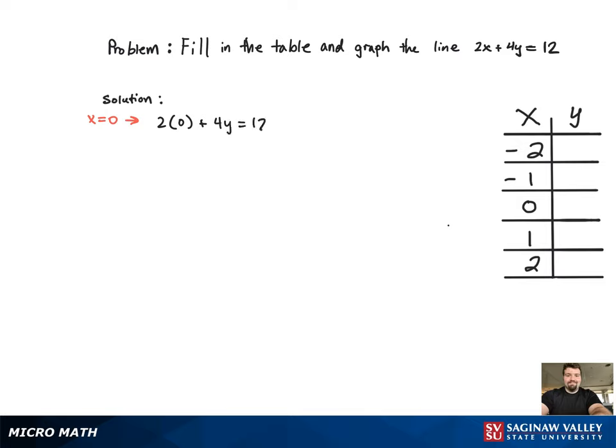We're just going to start with one of the values. We'll start with x equal to 0 and plug that in for x and then find the corresponding y value. Now that we've solved for y equal to 3, that's going to correspond to x equal to 0 right here on the table.